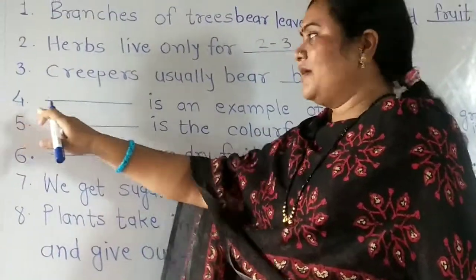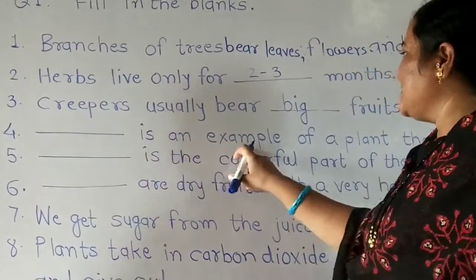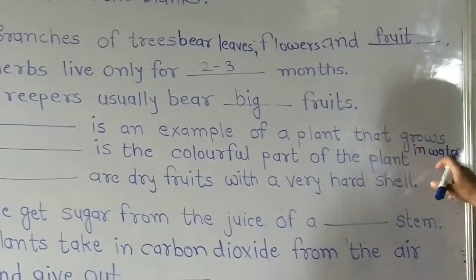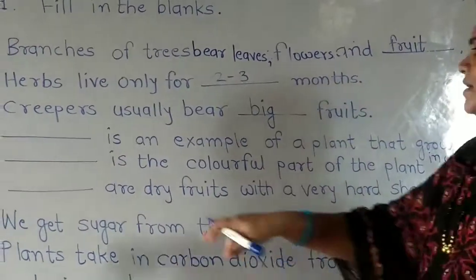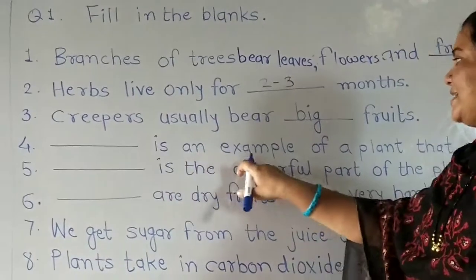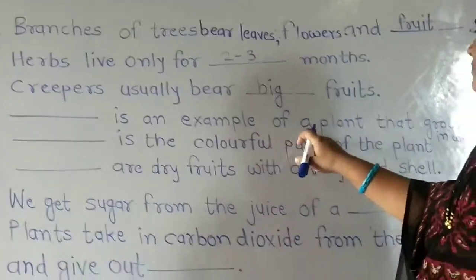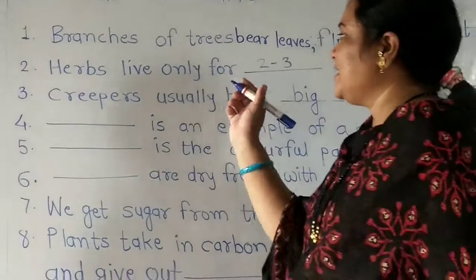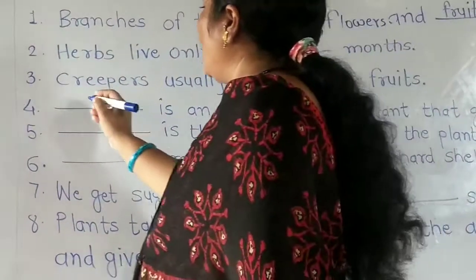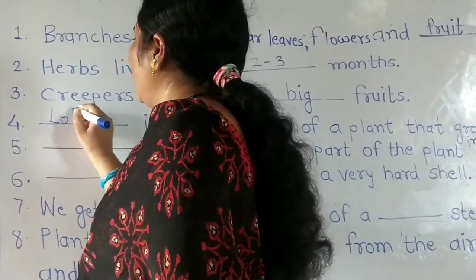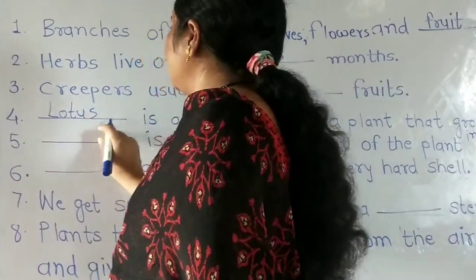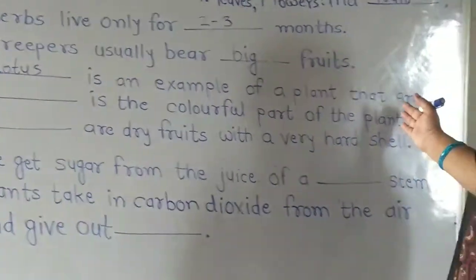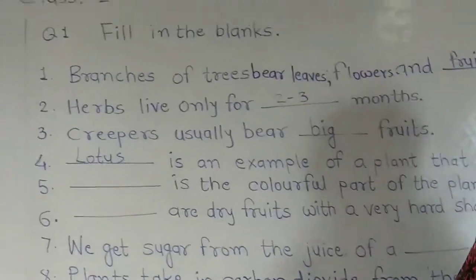Number 4: Dash dash is an example of a plant that grows in water. The answer is lotus. Lotus is an example of a plant that grows in water.